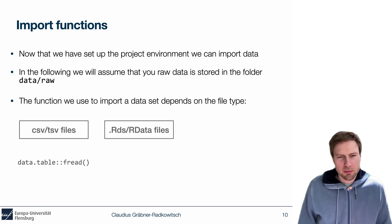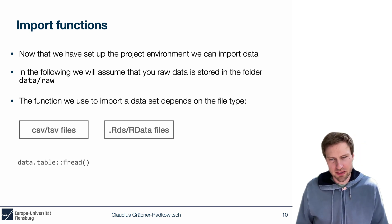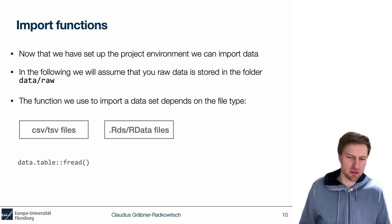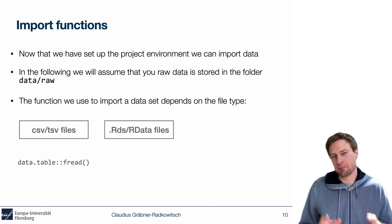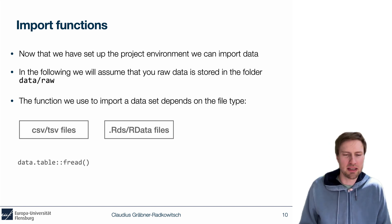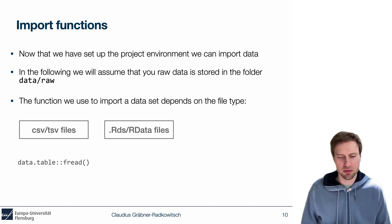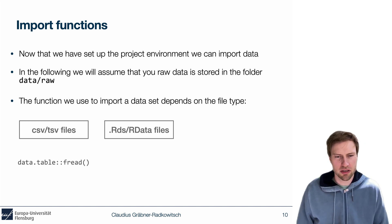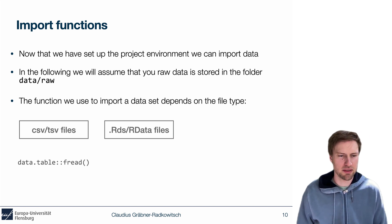Another very common data format is RDS or RData files. This format is much better than CSV in the sense that it's faster to import, faster to write, and has better compression properties. The big drawback, however, is that it can only be accessed from R. So if you work together with people who use SPSS or Stata, they can't open RData or RDS files, and in that case you may need to go back to CSV or TSV.